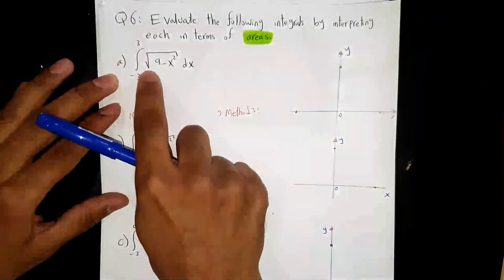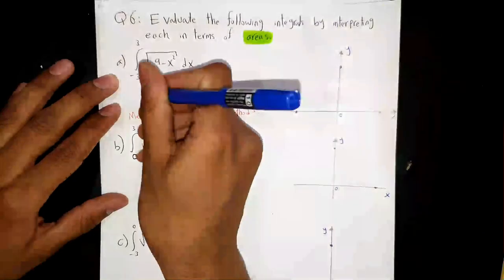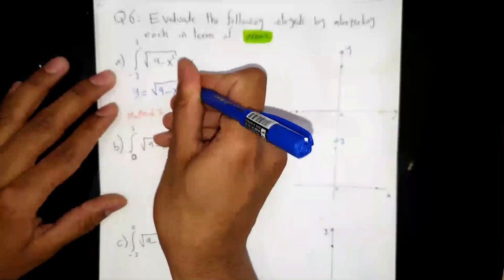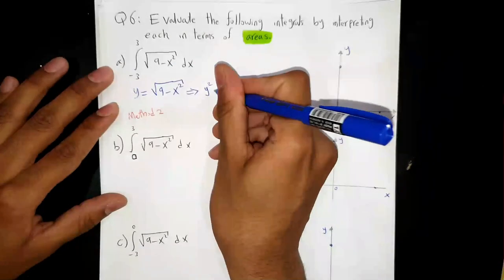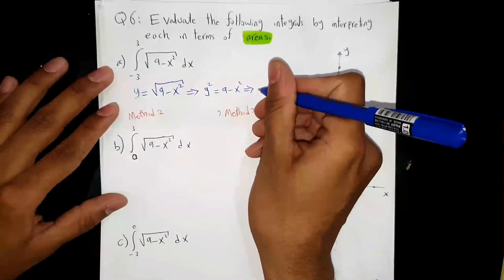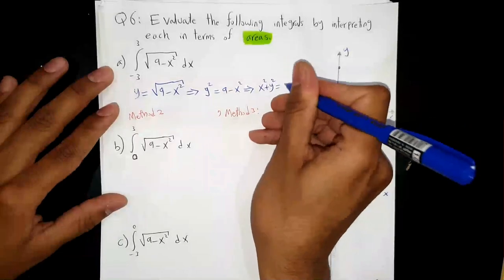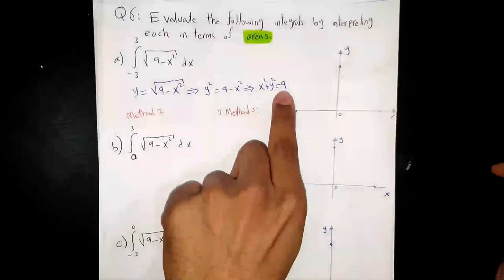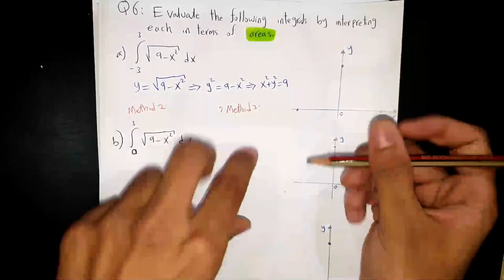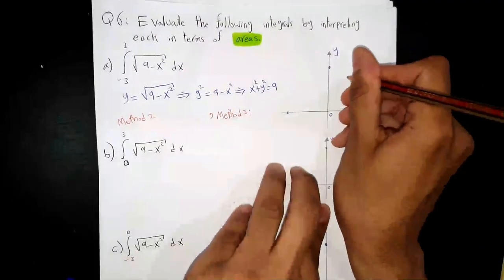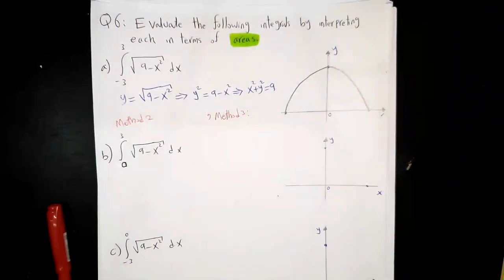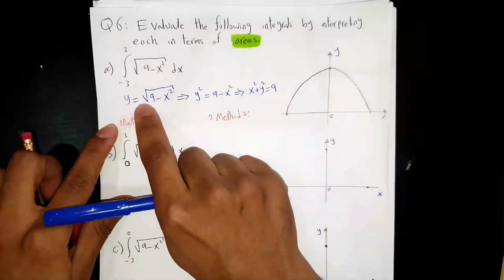Integrate from -3 to 3 of √(9 - x²). First, let y = √(9 - x²). Square both sides: y² = 9 - x². Arranging terms gives x² + y² = 9. This is a circle of radius 3 and center (0, 0). So this is the upper part of the circle. What is the reason for taking the upper part only?